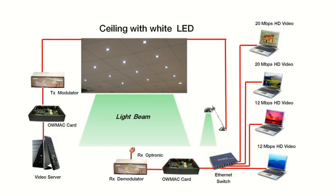Here you can see a diagram of the system that demonstrates wireless communications by light. This technology is commonly referred to as visible light communications. In the demonstration, there is a server that streams four high-definition videos via a ceiling broadcast area and also a desk lamp. The net data rate is 100 megabits per second.